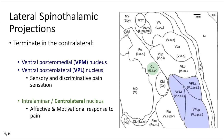The central lateral nucleus is involved in the affective and motivational response to pain, while the lateral thalamic projections are more involved in the sensory and discriminative aspects of pain sensation.